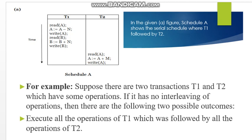Consider a schedule A having transactions T1 and T2 with some operations. If there is no interleaving of operations, then there are two possible outcomes: we can execute all the operations of T1 followed by T2, or we can execute all the operations of T2 followed by all the operations of T1. If transactions are executing one after the other in one particular schedule, this is called serial schedule.